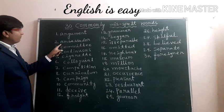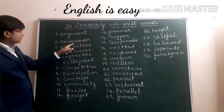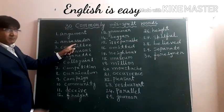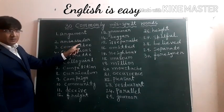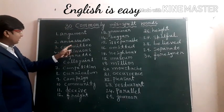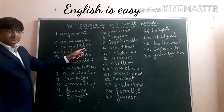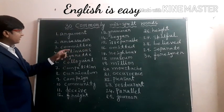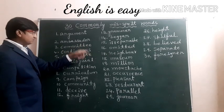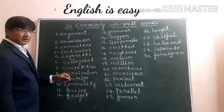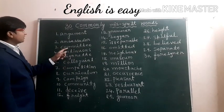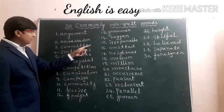Second one: Ambassador. In this word, generally we do a mistake in the S. When we write this word, we need to write double S. Third one: Committee. Some children write it with single M, single T, or single E. But remember, committee — we have to write double M, double T, and double E.